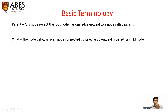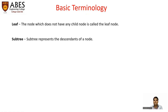Parent node: every node except the root node has one edge upward to a node called its parent node. Child node: the nodes below a given node connected by its edge downwards are called its child nodes. Leaf node: a node which does not have any child node is called a leaf node.